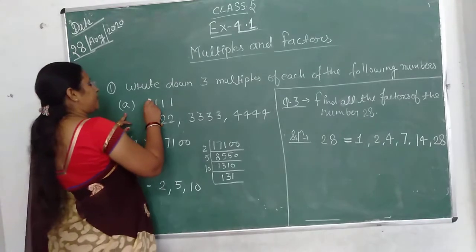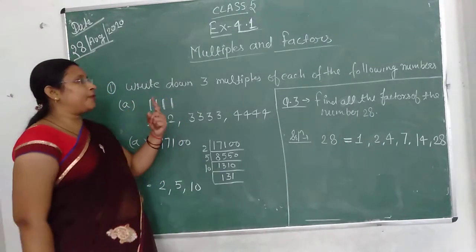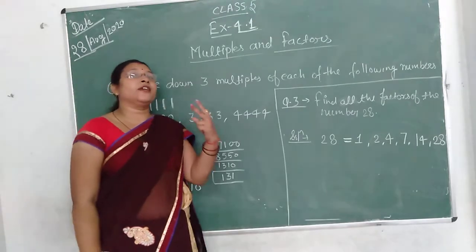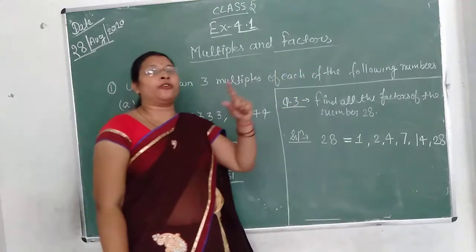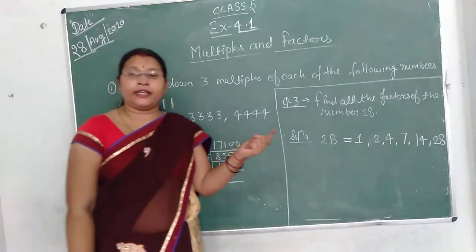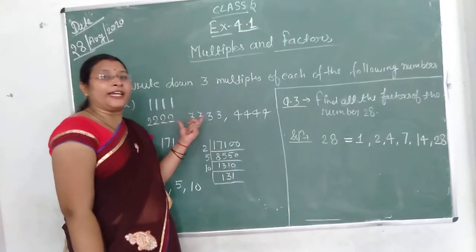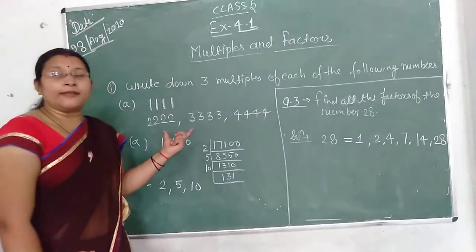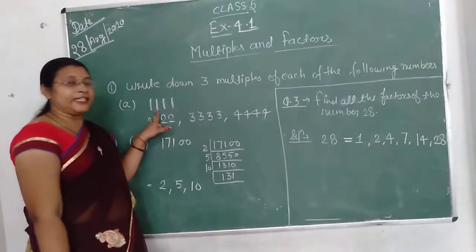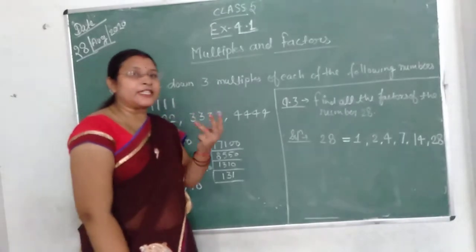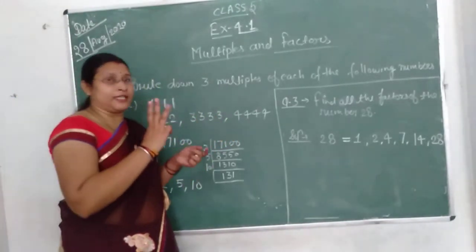Now, question number one: write down three multiples of each of the following numbers. So what do I have to do? I have to write three multiples of each of the following numbers, in part A and part B.